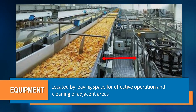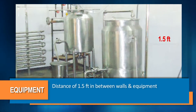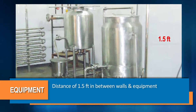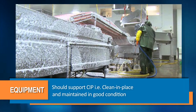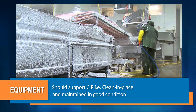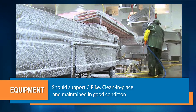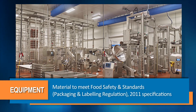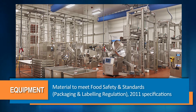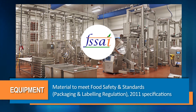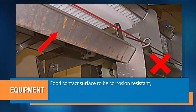Ideally a distance of 1.5 feet shall be maintained between walls and equipment and between equipments. As far as possible it should support CIP, that is clean in place, and be maintained in good condition. The construction material of equipment shall meet the specifications laid down under Food Safety and Standards Packaging and Labeling Regulation 2011.